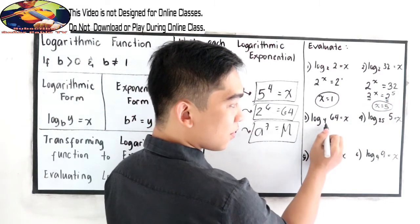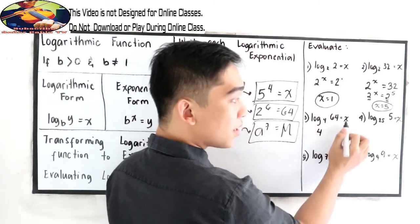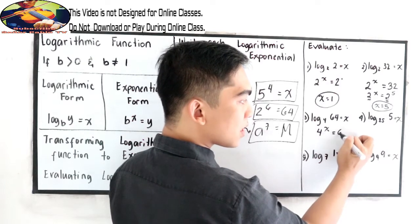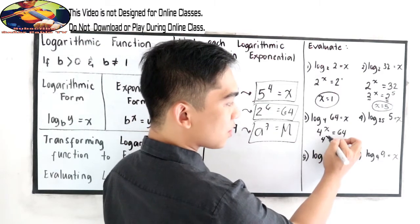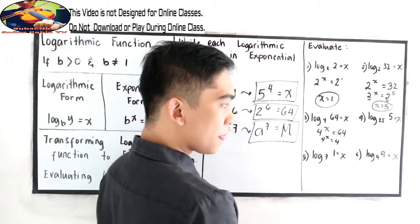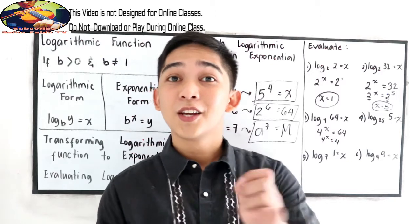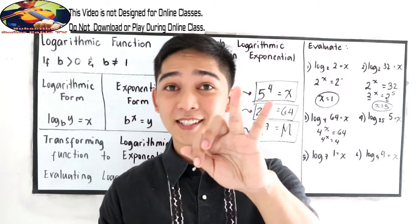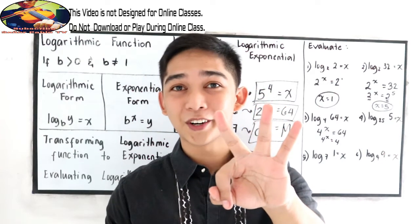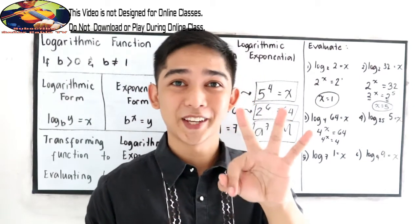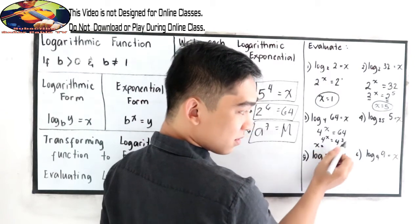Number 3: log 64 base 4. So 4 raised to x is equal to 64. Our base is 4. What will be the exponent of 4 to make it 64? So 4 times 4 is 16, 16 times 4 is 64. The exponent is 3, therefore x is equal to 3.